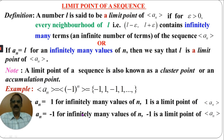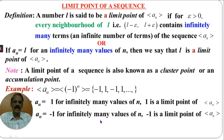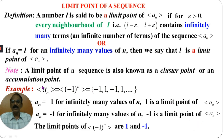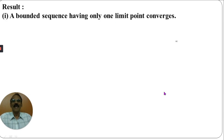Similarly, look at the odd terms: the first term is -1, the third term is -1, the fifth term is -1. That is, every odd term is -1. How many odd numbers are there? Infinitely many odd numbers are there. Therefore, AN equals -1 for infinitely many values of N, and hence -1 is also a limit point of the sequence AN. Thus, this sequence AN has two limit points: 1 and -1.